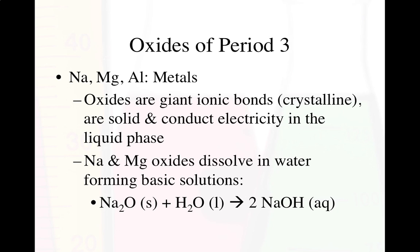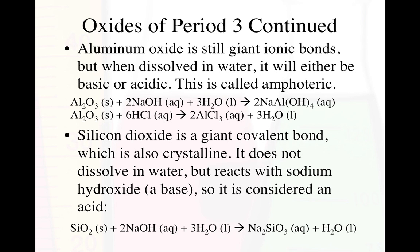Aluminum oxide forms giant ionic bonds, but when dissolved in water it can be either basic or acidic — that's called amphoteric. Silicon dioxide is a large covalent bond, also crystalline, but does not dissolve in water. It will react with sodium hydroxide, a base, so silicon dioxide is considered an acid. That's worth a flashcard, and those reactions were also on our review and enhance worksheet.